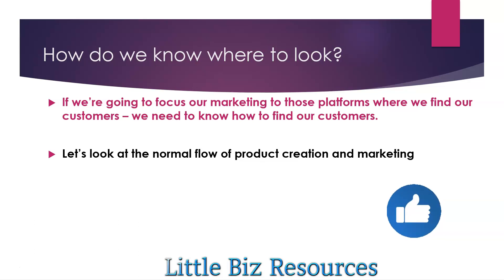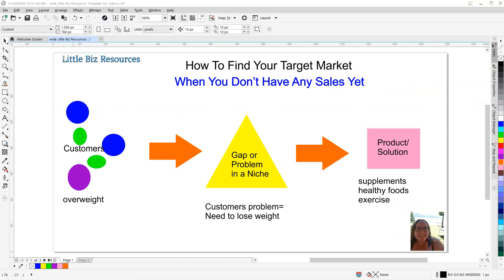Let's look at the normal flow of product creation and marketing, and then we'll look at what happens for many of us in e-commerce when we get started. The normal flow is that there are customers out there, and they have a gap in the service delivery — a gap in the solution they have, a problem in a specific niche. Then you may come up with a product or solution because of that.